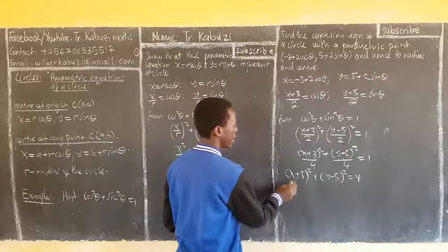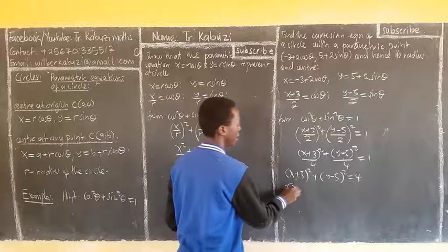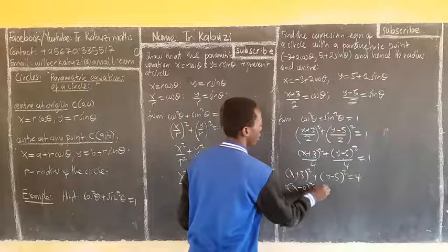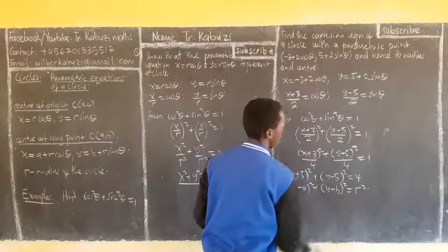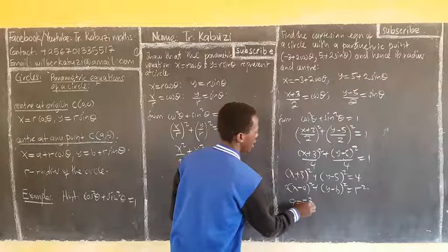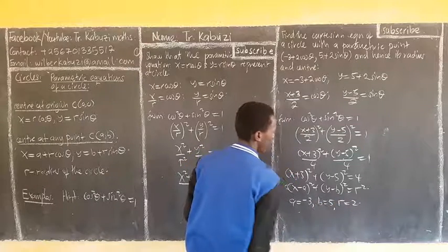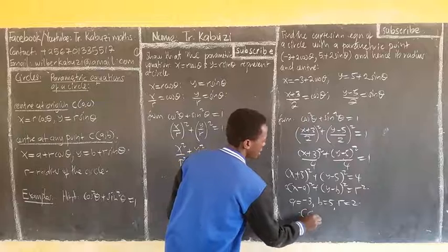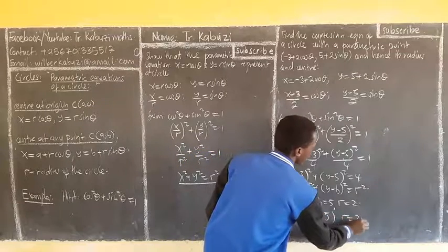To find the center, our center is always like this: we have x minus a squared plus y minus b squared equal to r squared. You compare it with the general form. So our center: it compares that my a is negative 3, my b is 5, and my r is 2. So now my center is (-3, 5) and my radius is 2 units.